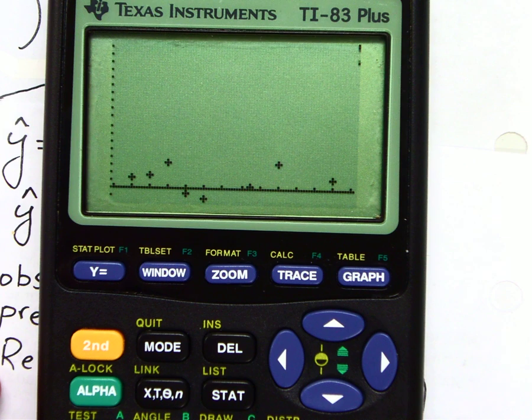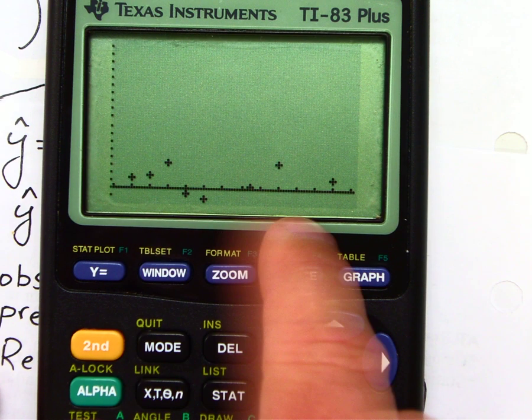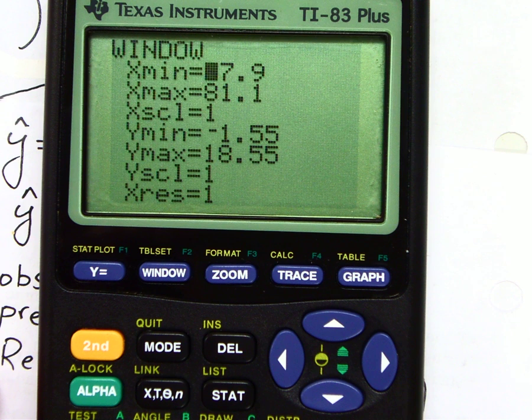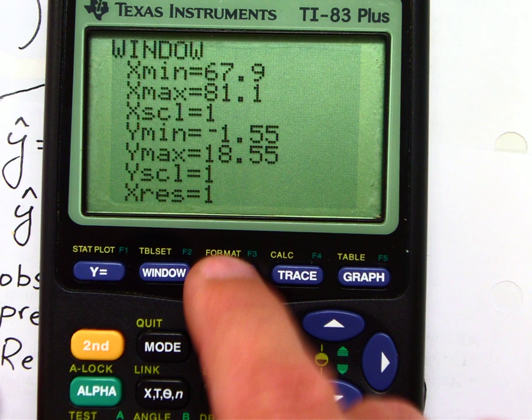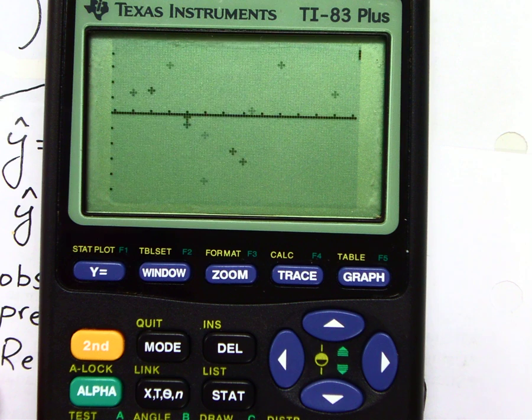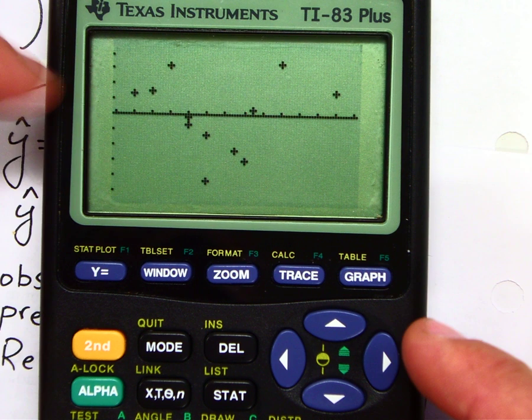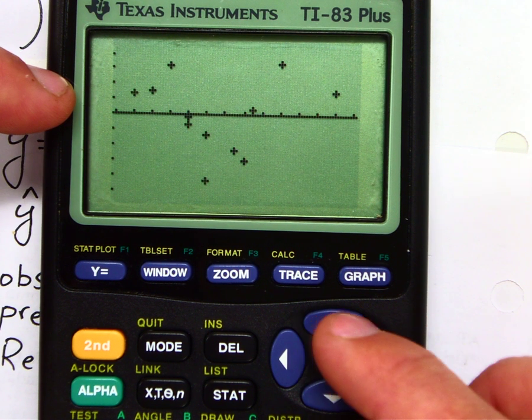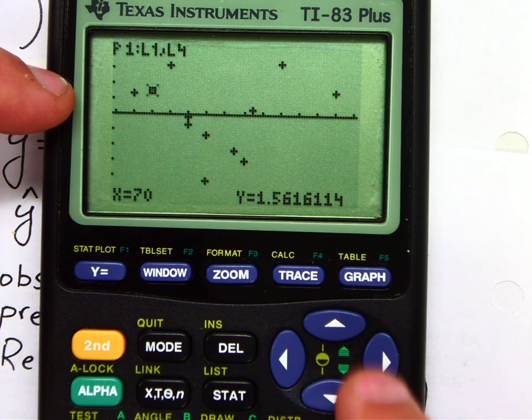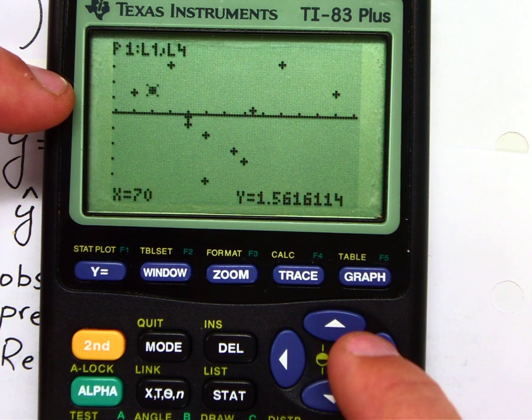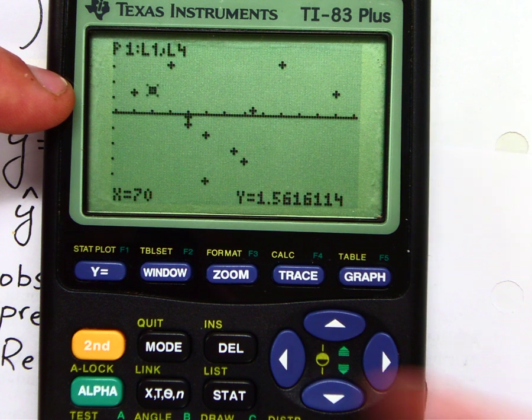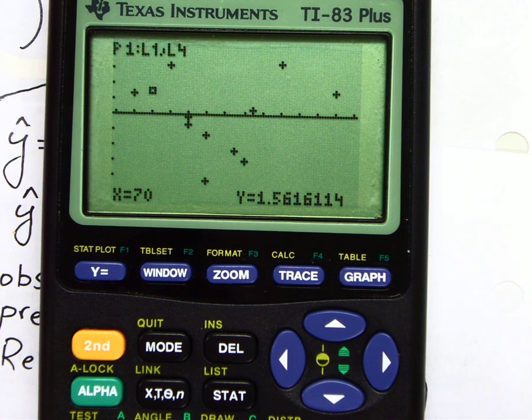Now, notice when I hit graph, it's kind of bizarre here because it still has my old window for my box plot. So, we're going to go to zoom stat, which is item number 9, and it's going to configure a nice, pretty residual plot. Some points are above, some points are below, and these are all the residual values. This shows you how close those points are from 0. Now, obviously, if a residual is 0, it's more accurate.